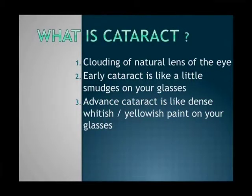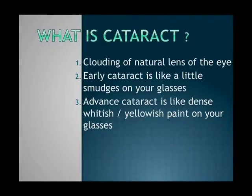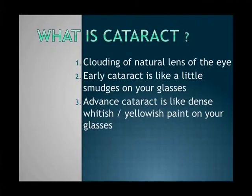A cataract is basically a clouding of the lens of the eye. Imagine somebody has a little smudge on their glasses and you're looking through that smudge — this is how an early cataract feels. In more advanced cases, you're going to see much more of a fuzzy or blurred vision, almost like looking through paint or a dense opacity on your glasses.